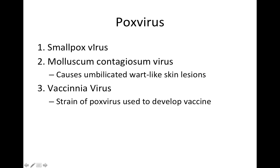There are three different viruses we're going to talk about within the pox virus: smallpox, molluscum contagiosum virus, and the vaccinavirus. Molluscum contagiosum virus causes umbilicated, wart-like skin lesions. The vaccinavirus is the strain of pox virus that was used to develop the vaccine for smallpox.